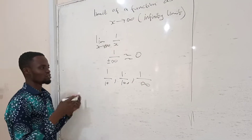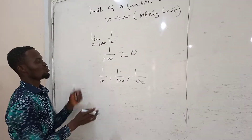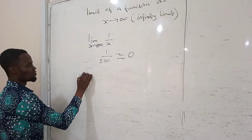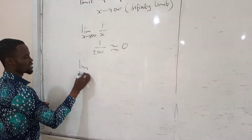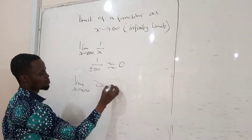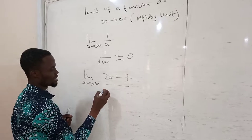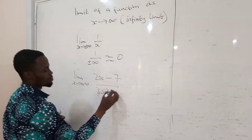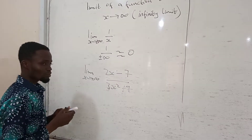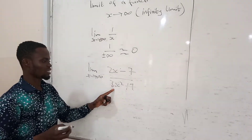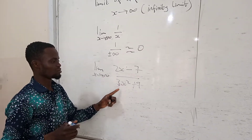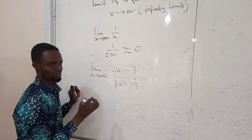I'm going to give an example to find the infinity limit. Suppose we have the limit as x goes to infinity of 2x minus 7, all divided by 3x squared plus 9. For this one, we pick the variable with the highest exponent. The limit variable here is x squared — that's the highest exponent.